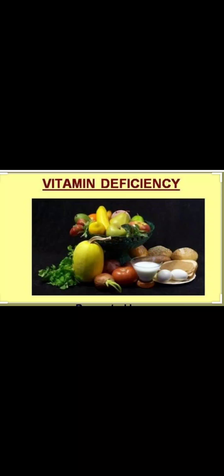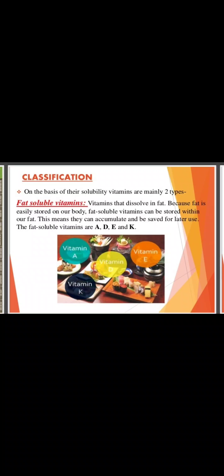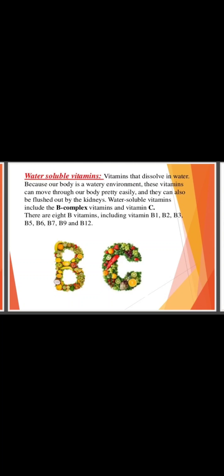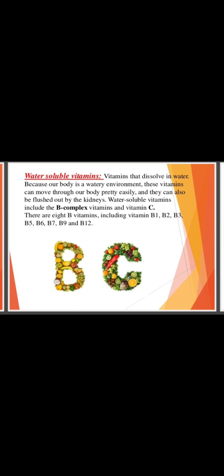Next are the vitamin deficiency diseases. First, let us discuss the types of vitamins. There are two types of vitamins based on their solubility. Vitamins A, D, E, and K are the fat-soluble vitamins, whereas vitamins B and C are the water-soluble vitamins. Vitamin B includes B1, B2, B3, B5, B6, B7, B9, and B12, which is why it is known as the B complex.